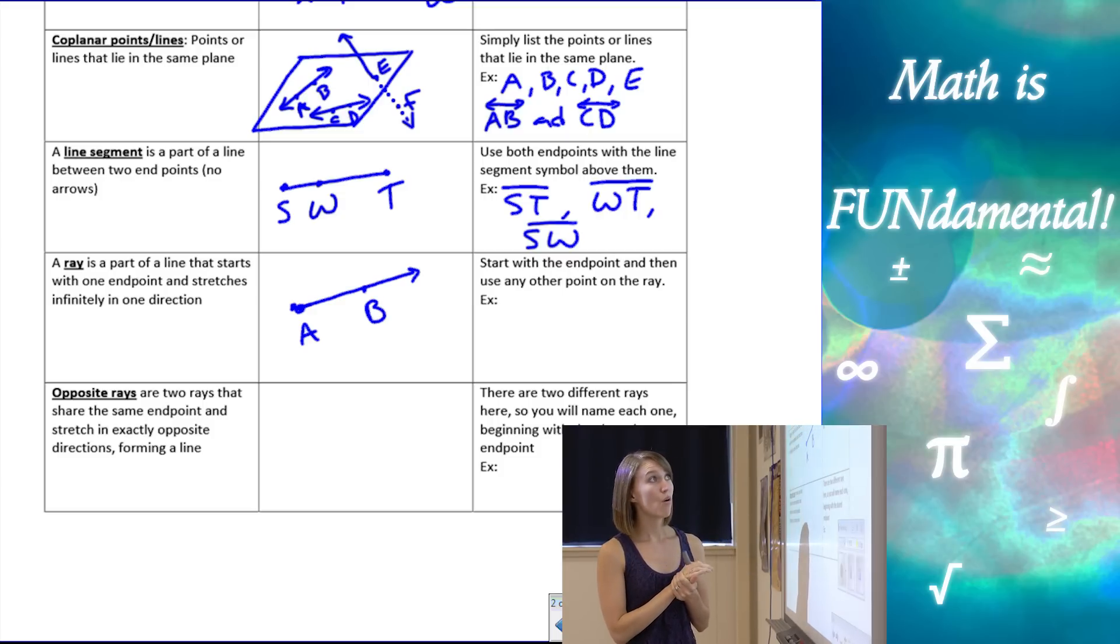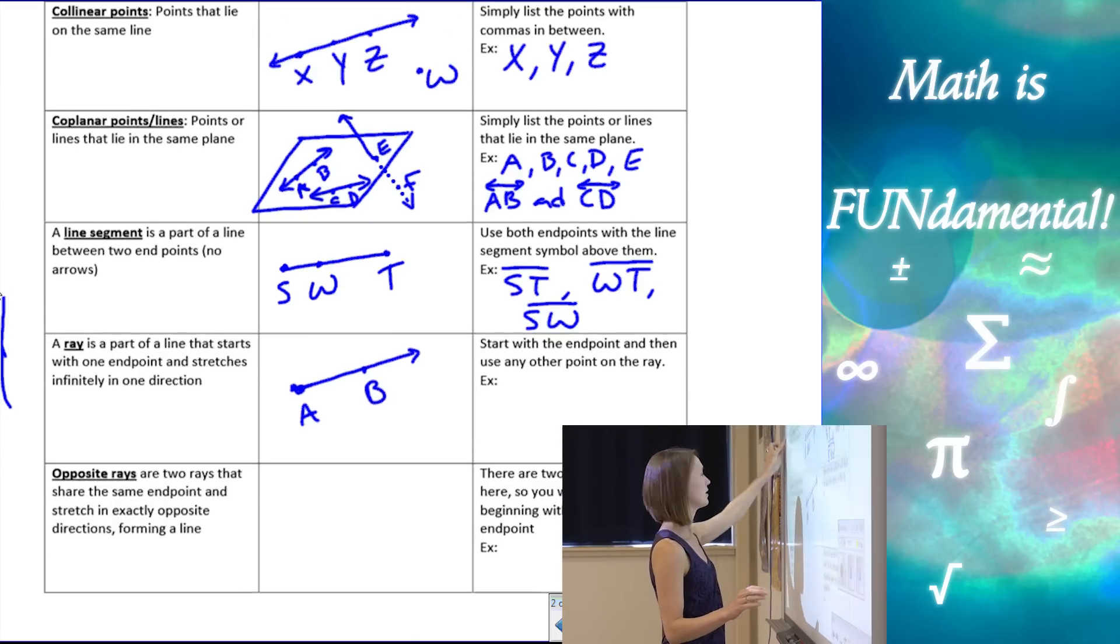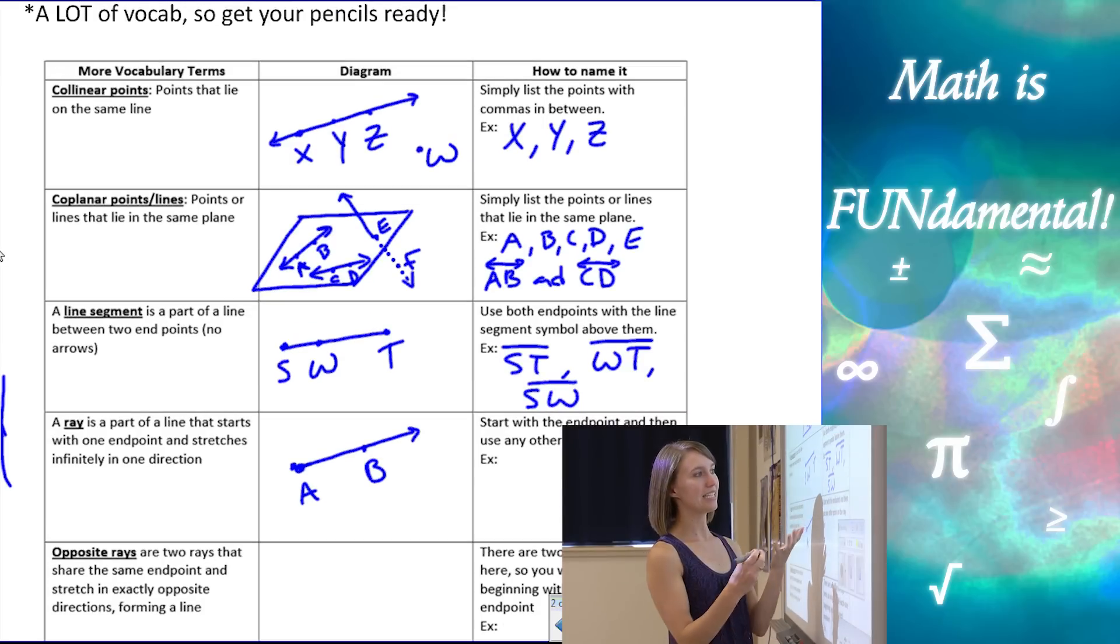Now when I name this ray, it's very important because order matters. With a line or line segment, for example, if we go back to that last example, I had ST, I had SW, I could also put WS and it would be the same as SW.